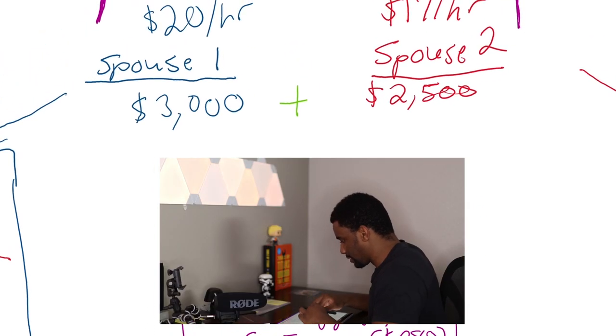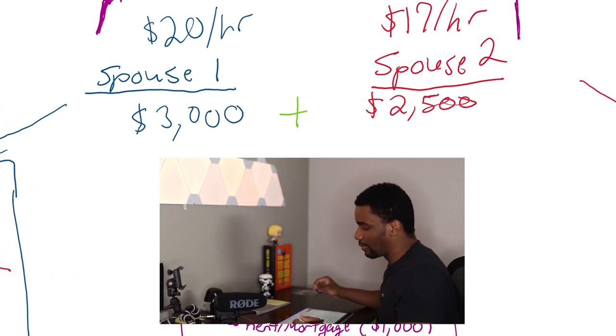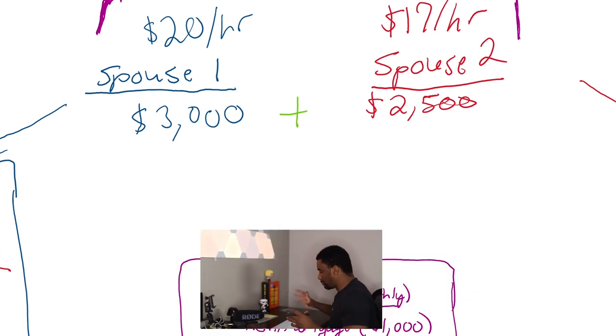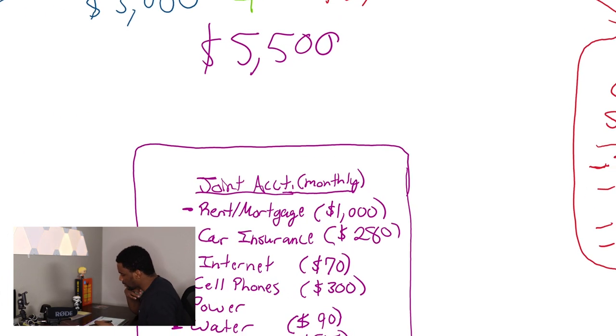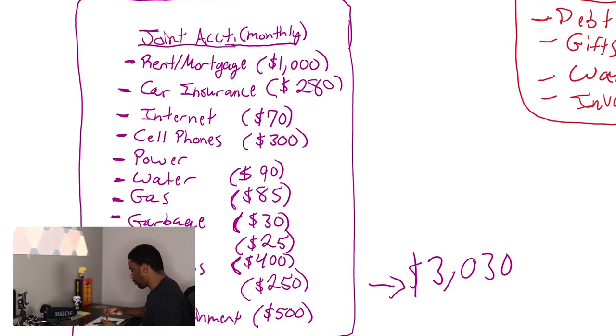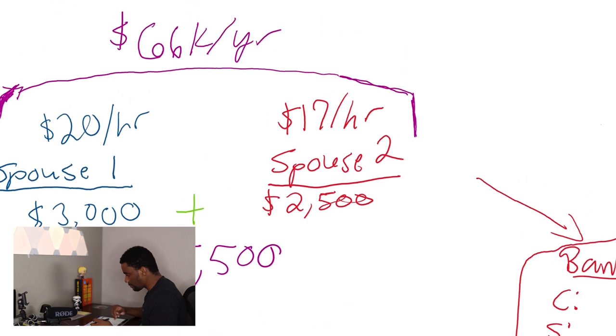Alright, so we're moving up top. Let's say spouse number one makes $20 an hour and spouse number two makes $17 an hour. And that means just very rough, spouse one is going to bring home about $3,000 a month and spouse two is going to bring home about $2,500 a month. So together they're going to bring home about $5,500 a month. So $5,500 a month.